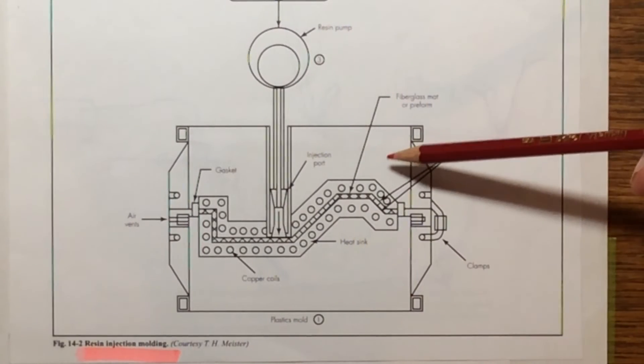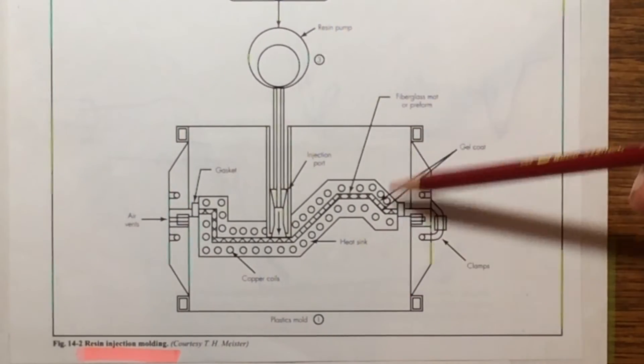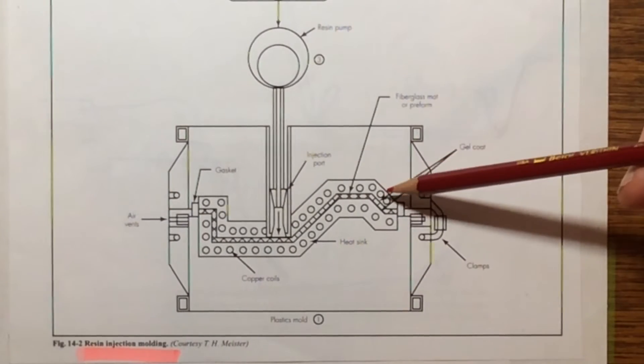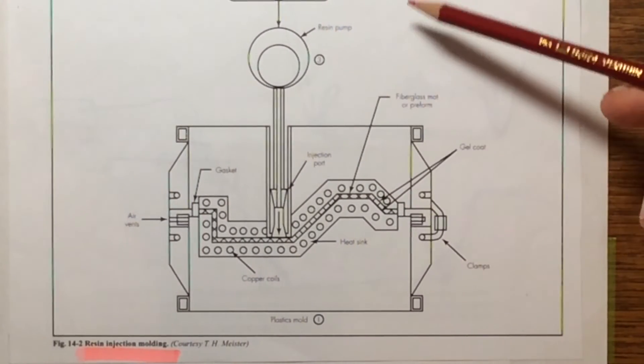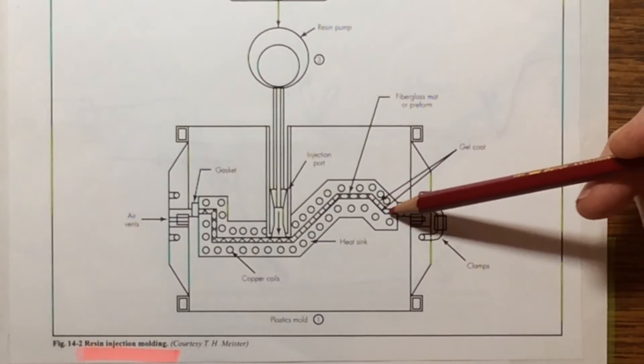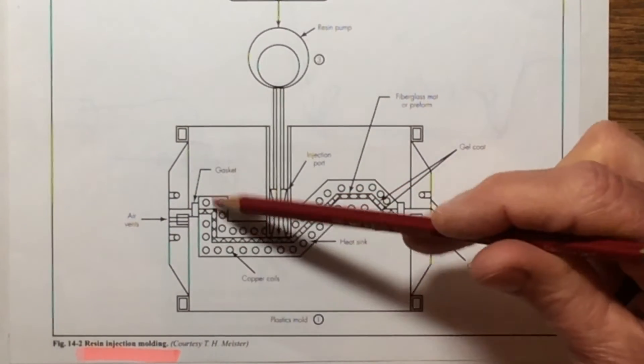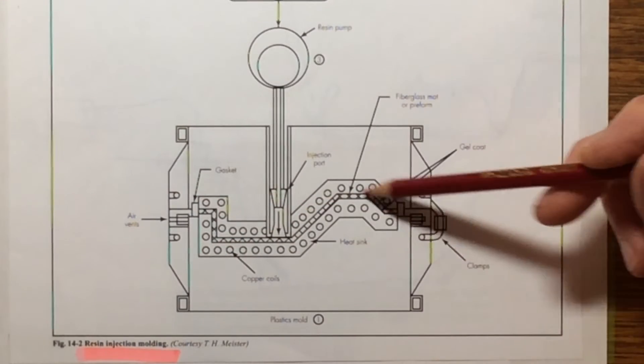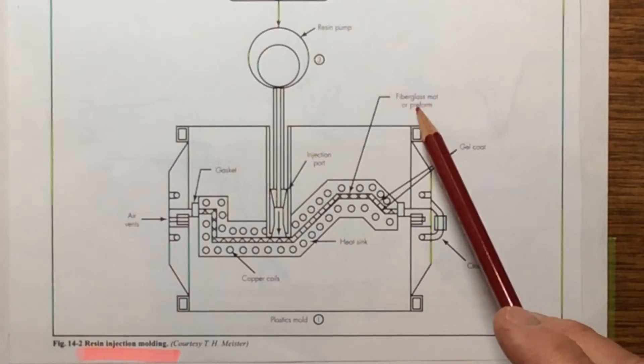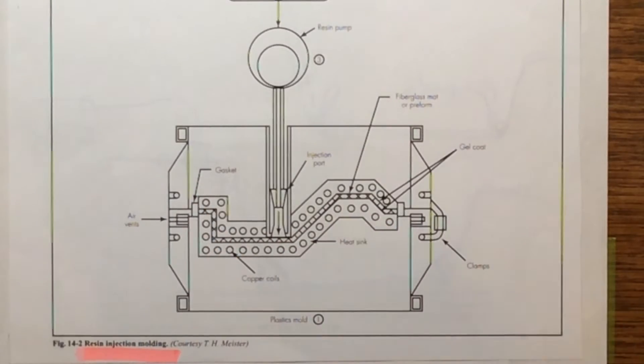So again, it's sort of a combination of very similar to injection molding, but obviously not using a thermoplastic because most composites use a thermoset. But be as it may, it affords the extra reinforcement that you get from using this reinforcing mat or fiber preform that goes inside of here. So it's a really good product.